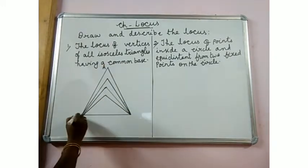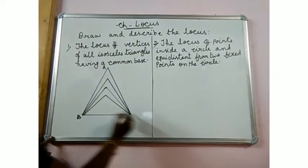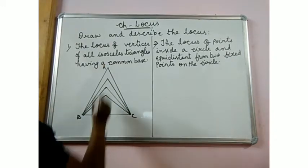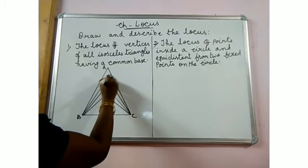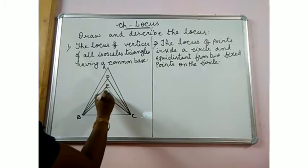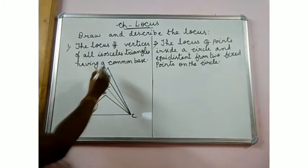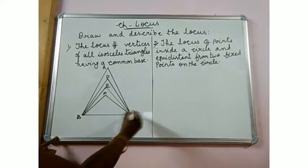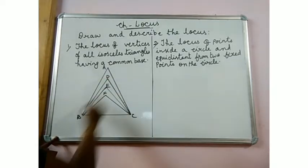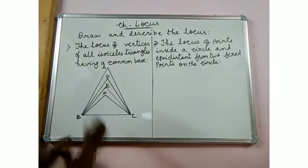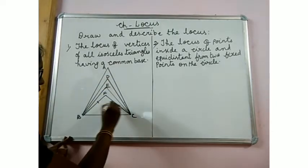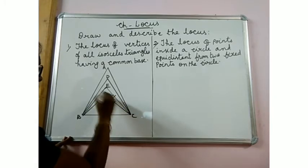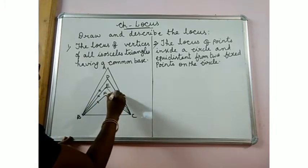Let me name the points as A, B, C, D, E, F. So we have triangle ABC, triangle DBC, triangle EBC, and triangle FBC — all isosceles triangles on the same common base BC.